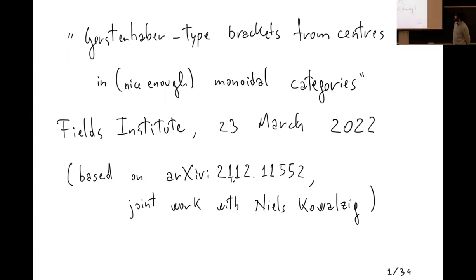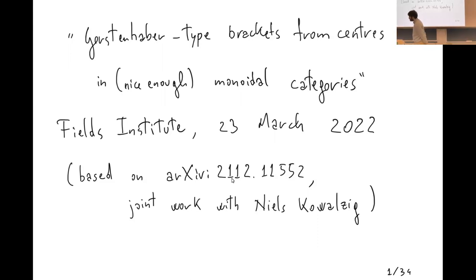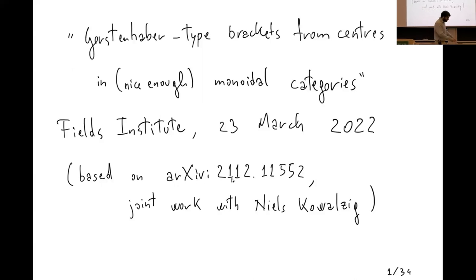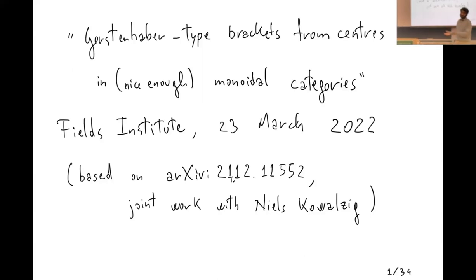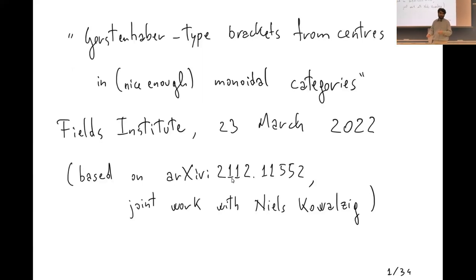It's a pleasure to be here, even in these difficult days. I'll continue on the theme of Gerstenhaber algebras, as we just saw in Matthew's talk. Of course, not to make it too simple to follow, I'm using the other convention: my Gerstenhaber algebra brackets will have a cup product of degree zero and a Lie bracket of degree minus one.